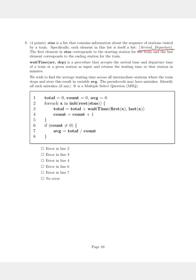Now they are given here that wait_time, which accepts two parameters, that is arrival and departure, is a procedure that accepts the arrival time and the departure time of a train at a given station as input and returns the waiting time at the station in minutes.